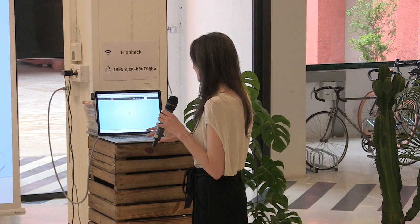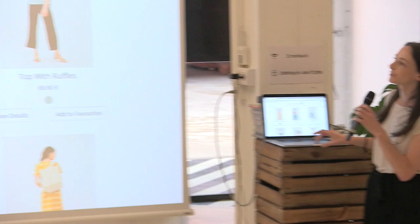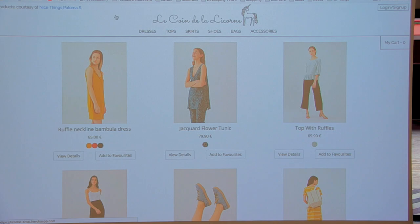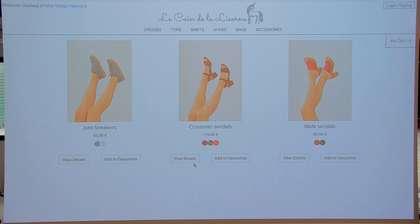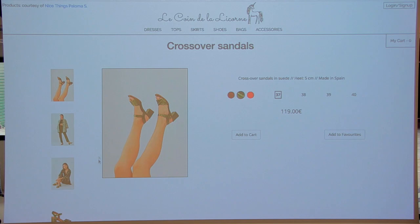So this is the eShop. All the products are courtesy of Nice Things, which is a Spanish clothing brand. You have all the functionalities of the basic eShop. You can see all the products here. You can browse by categories. You can also view the details. You can change the colors. You can change the picture, et cetera.